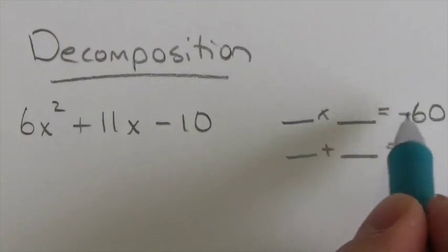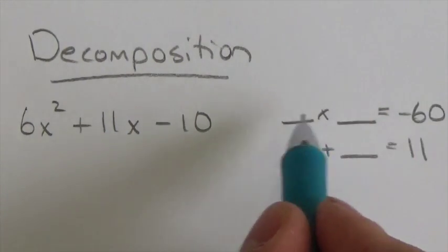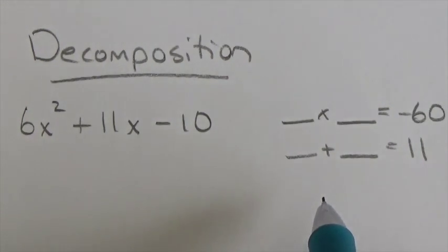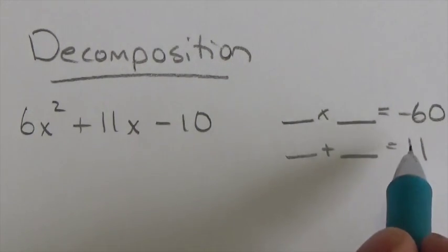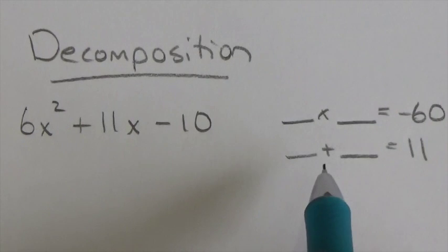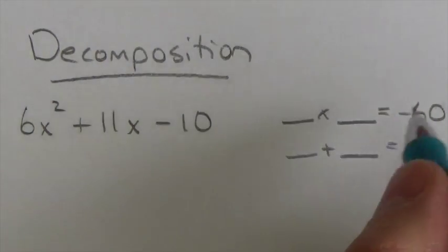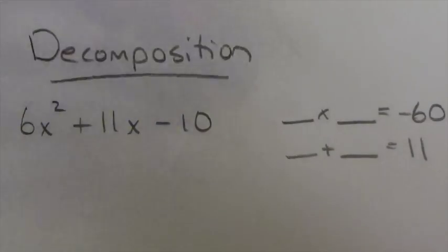Now, because this product here is negative, I know that one of these two numbers here is going to be negative. Because the sum is positive, I know that the larger of the two is going to be the positive one. So I think about 60. Now, this is the hard part. Coming up with these numbers can be quite difficult. And I don't deny that. I understand that that can be the case here. You've got to kind of play around with it. You've got to guess at it a little bit here.